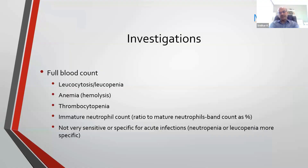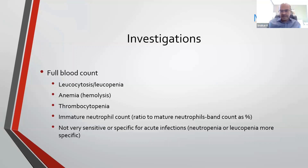Most of us are used to looking at the immature neutrophil ratio, which is the band count. We look at the ratio of mature to immature neutrophils, represented as a percentage or fraction of the band cells. The white cell count itself is not very sensitive or specific for acute infections. A reduction in count like neutropenia or leukopenia is more specific compared to an increase. Frequently, the labor process itself causes the white cell count to go up, so neutrophilia is not very specific.